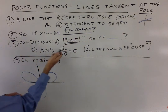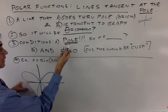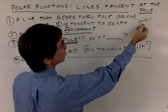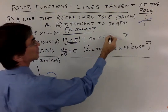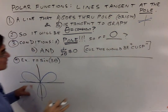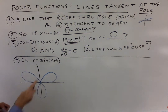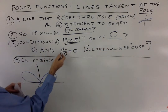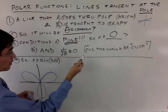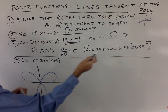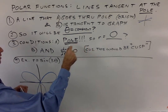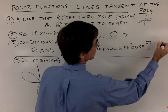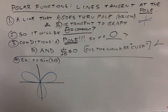The conditions that create this are: the line goes through the pole and is tangent to your function at that point. The key condition is r equals zero — you set r equal to zero and solve for theta. There is a second condition: the rate of change of r with respect to theta cannot be zero. That would create a cusp — a situation where as theta changes, the rate of change of r slows and stops at the origin, creating a shape that doesn't have a tangent, which violates the definition of tangent.